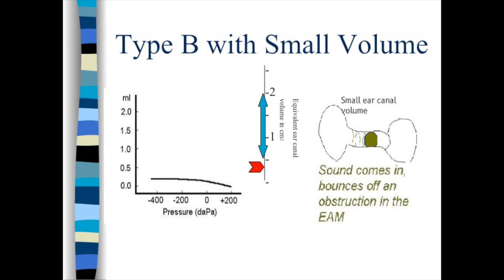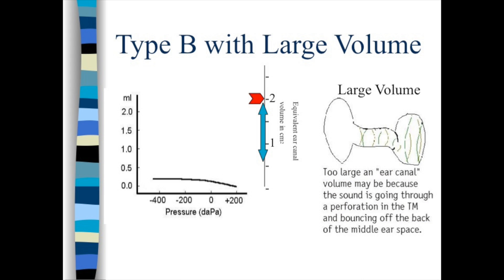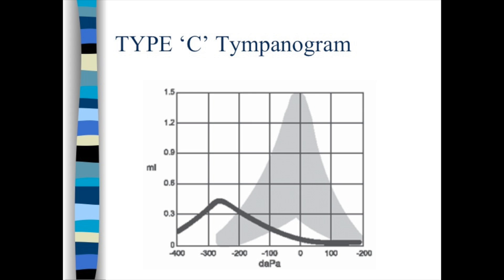Low volume implies a blocked canal. High volume implies you're measuring the external canal and the middle ear too. If the peak is significantly shifted — negative 180 or more — that means there's negative pressure in the middle ear. This is typically from eustachian tube dysfunction, with or without middle ear fluid.